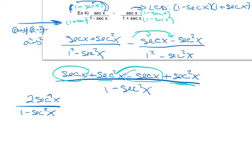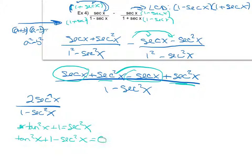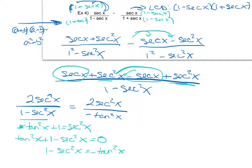Looking more closely, I see a one and a trig function squared in the denominator, so I go to my Pythagorean identities. I find that tangent squared x plus one equals secant squared x. Rearranging by subtracting secant squared x and then subtracting tangent squared x, I get one minus secant squared x equals negative tangent squared x. So the denominator of my expression equals negative tangent squared x.